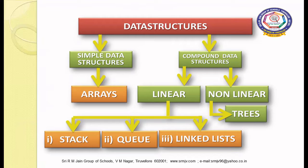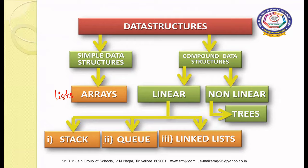To summarize: a data structure is categorized into simple and compound. Simple data structures are in the form of arrays or lists. Compound data structures are categorized into linear and non-linear. Under linear, we have stacks, queues, and linked lists; under non-linear, we have trees. In this chapter, we are going to discuss operations based on stacks and queues, focusing on the compound linear data structure.